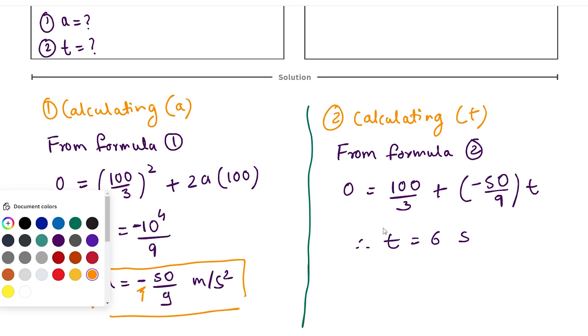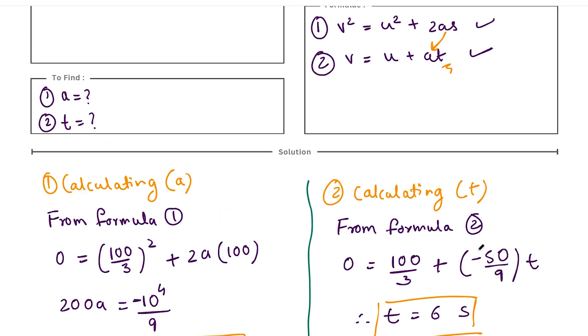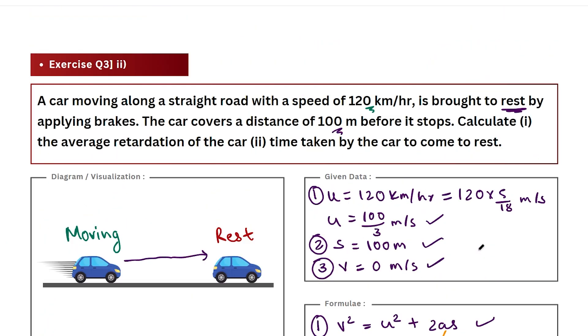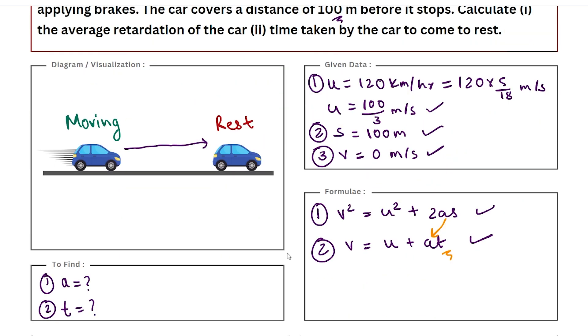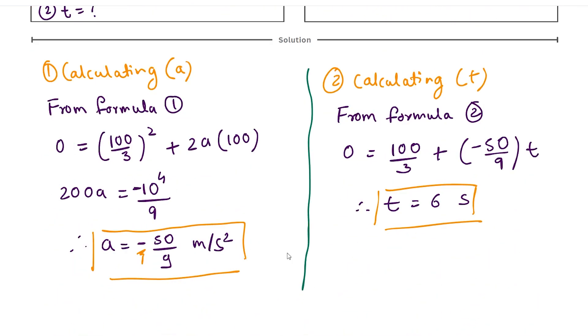With this, we have calculated the second part of our numerical as well. Make sure to write final statements with these values. The average retardation of the car is minus 50 by 9 meter per second squared, and the time taken by the car is 6 seconds. For your screenshot, take the screenshot for the first half of the numerical, that is the visualization and the data part, and the second part will be the solving of the actual numerical. With this, I hope this helped you. Thank you.